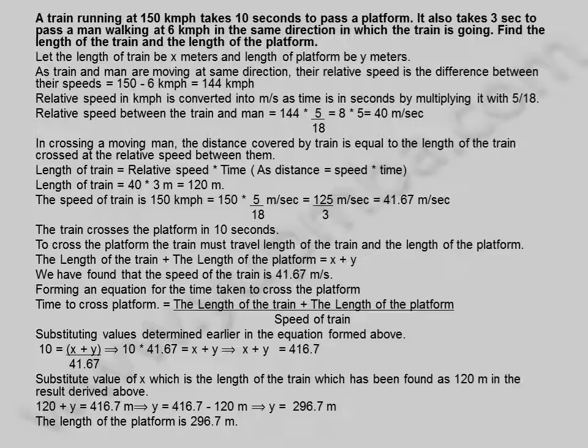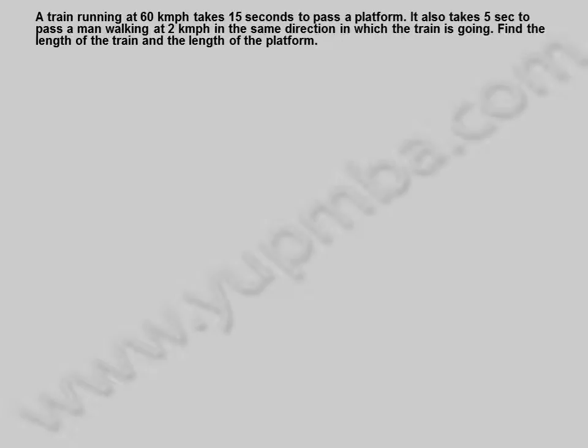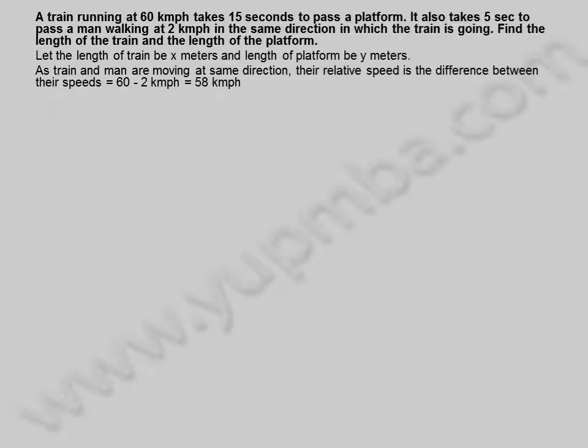Let us see another example. A train running at 60 kilometers per hour takes 15 seconds to pass a platform. It also takes 5 seconds to pass a man walking at 2 kilometers per hour in the same direction in which the train is going. Find the length of the train and the length of the platform. Let the length of train be x meters and length of platform be y meters.